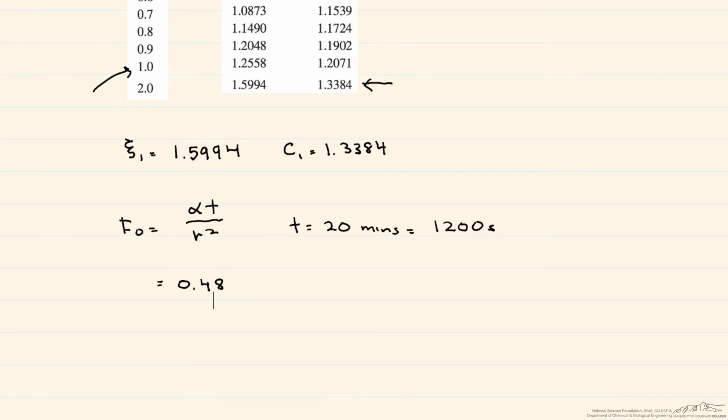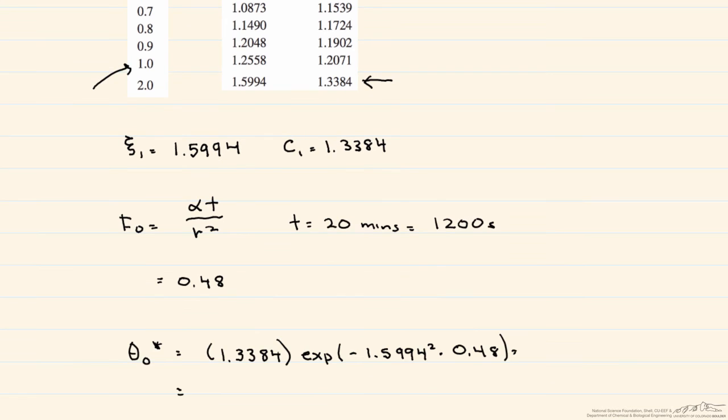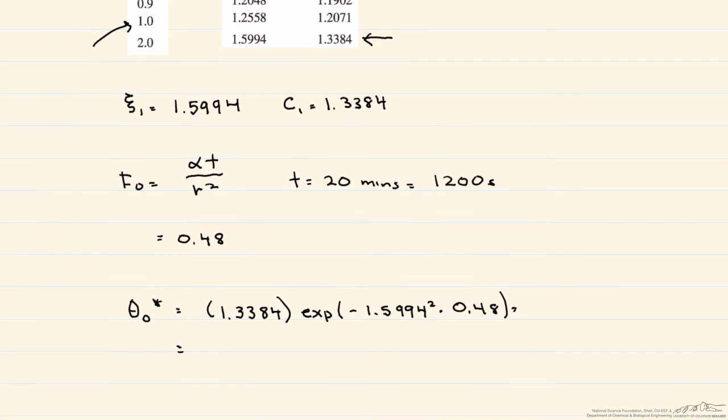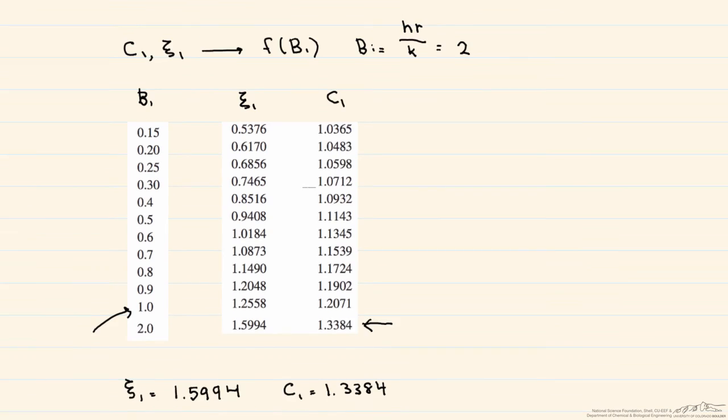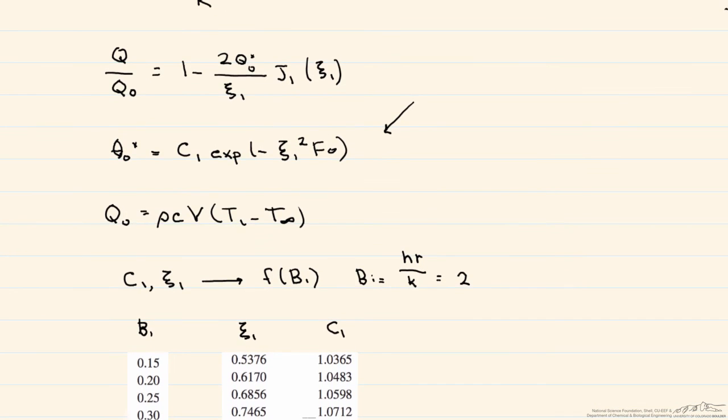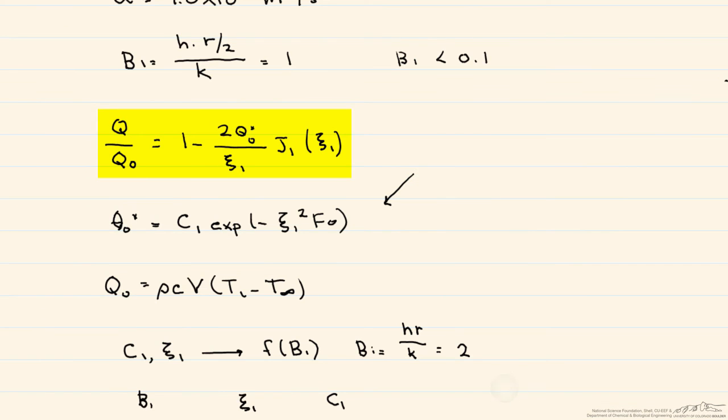So now we put this into our theta star. And when you calculate that number, we get that theta 0 star equaling 0.392. Now again, we go back to our original equation here. And if you notice, we have to find the Bessel function of 1.5994.